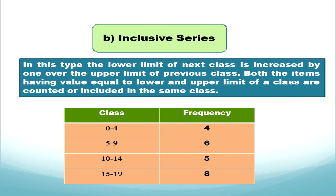Now what is an inclusive series? In this type, the lower limit of the next class is increased by one over the upper limit of the previous class — meaning the upper limit of the previous class is not the lower limit of the next class. So the upper limit is added with 1 to get the next lower limit.